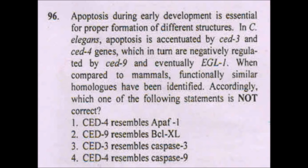Now the question asks which statement is NOT correct. Ced-4 resembles Apaf-1 — true. Ced-9 resembles the Bcl-xL family — true, as Bcl-xL is anti-apoptotic and ced-9 has negative regulation of apoptosis. Ced-3 resembles caspase-3 — true, both are effector caspases. Ced-9 resembles caspase-9 — this is NOT correct; ced-9 resembles Bcl-xL, not caspase-9. Caspase-9 is the initiator caspase activated by Apaf-1. So the answer is option 4.